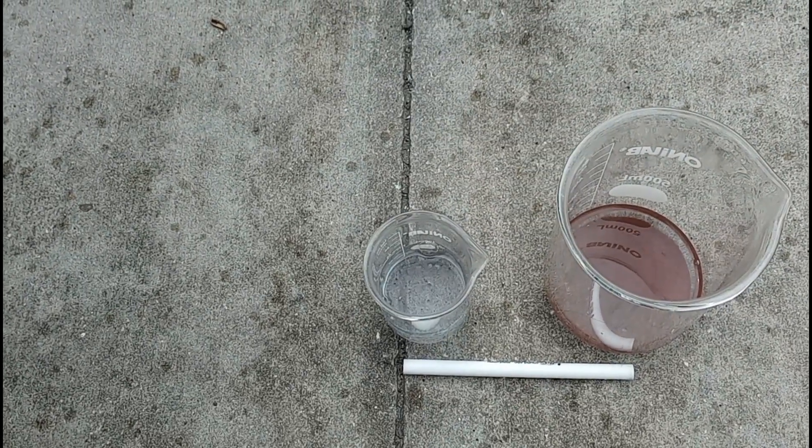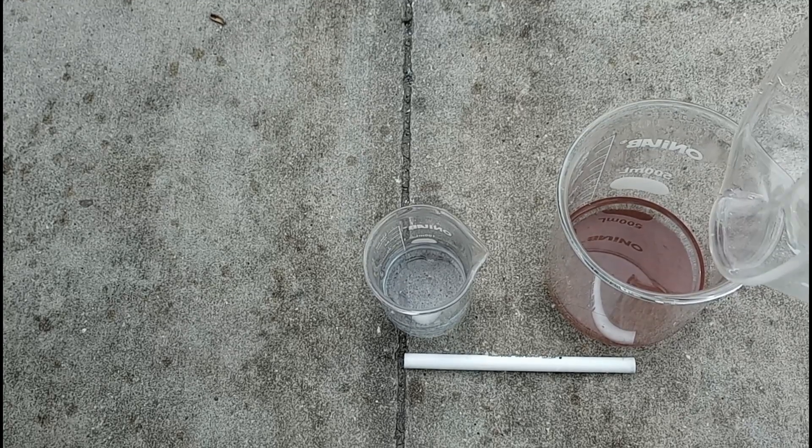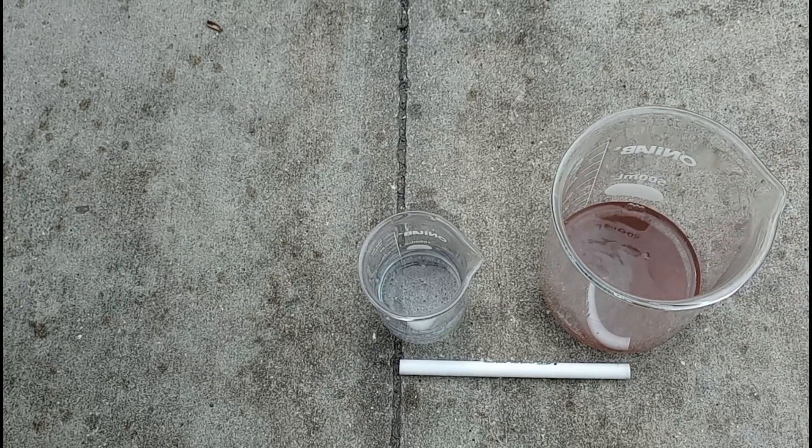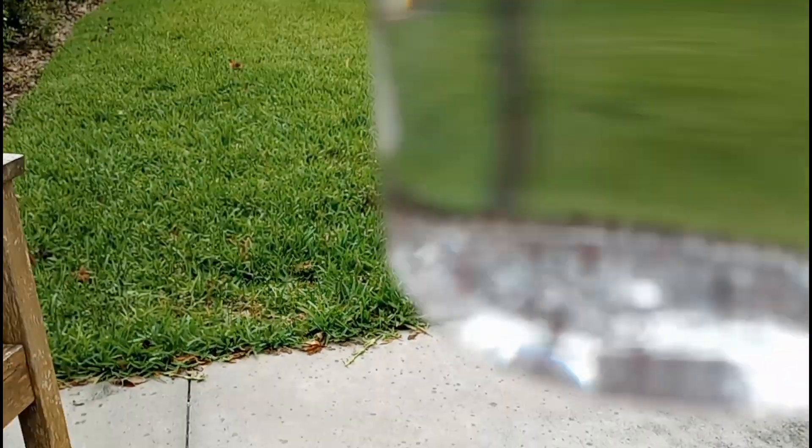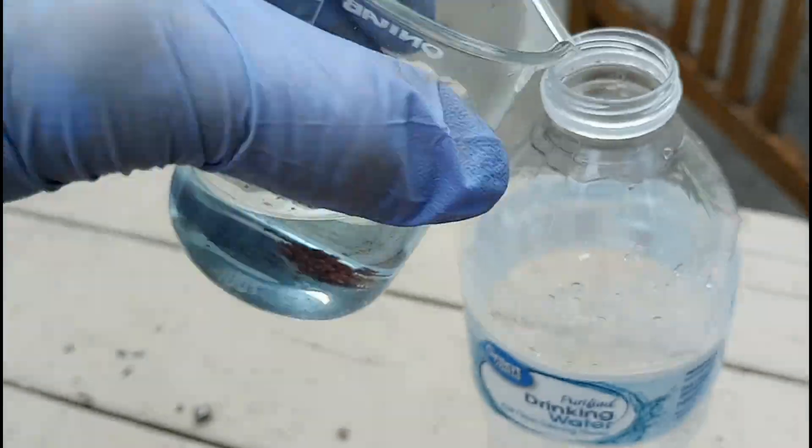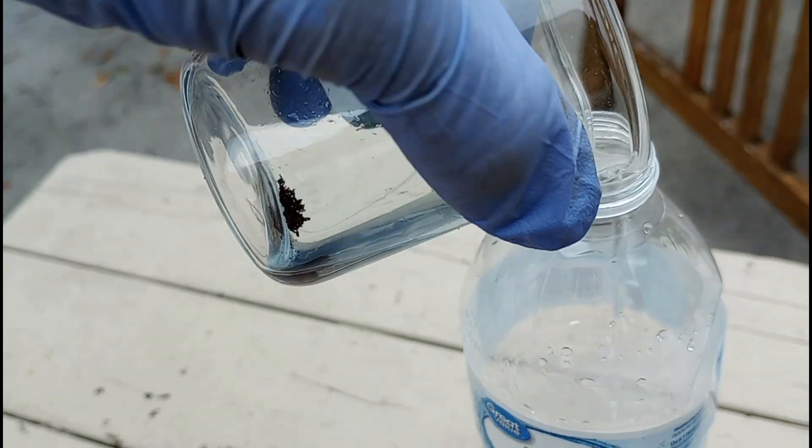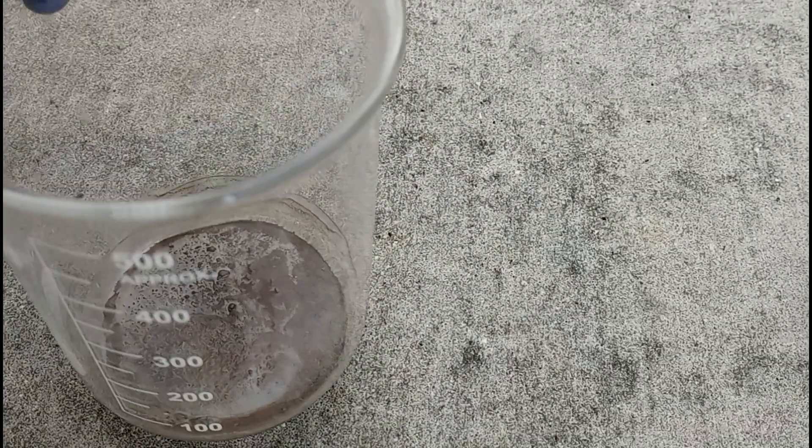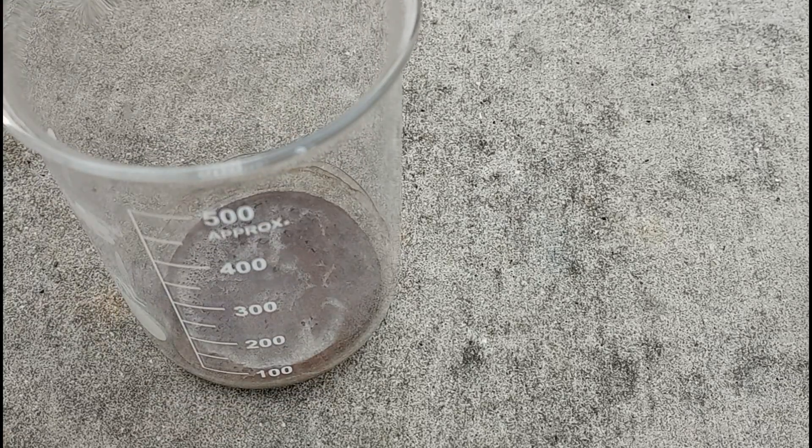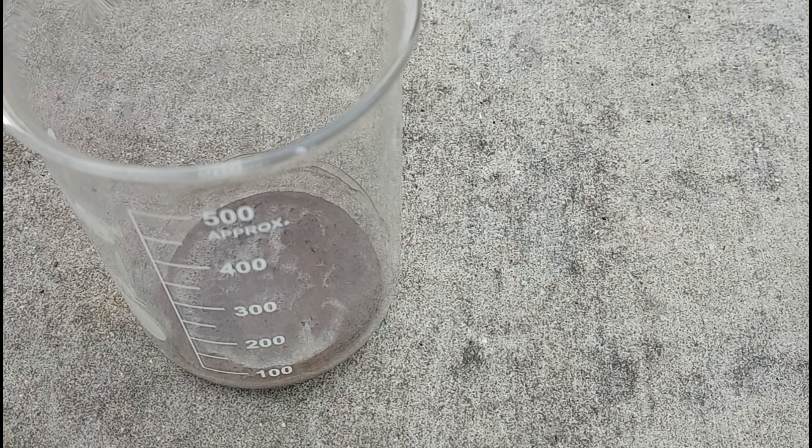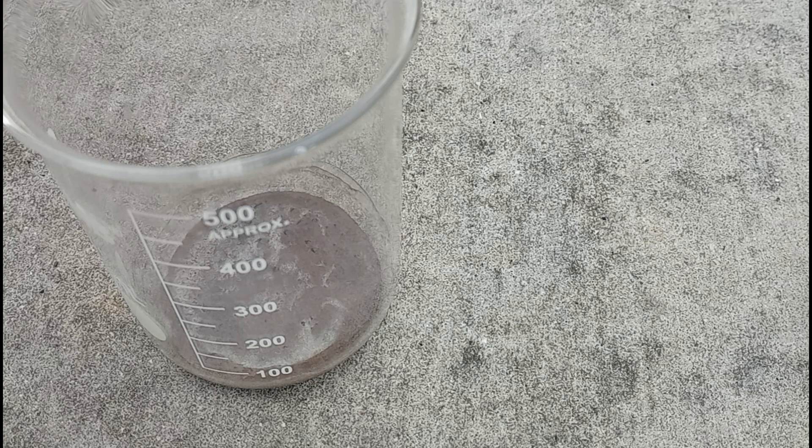I added some distilled water and combined both of the liquids and both of the solids. I put all of the liquid into this water bottle for storage. Now that I had all the solids together, it still looked like there were some black flakes, so I decided to turn this into copper chloride.